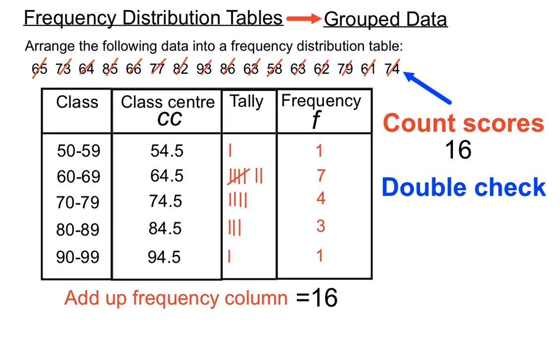And we can double check that we haven't missed any by adding up our frequency column and making sure we've processed 16 scores onto our table here. So 7 plus, 1 plus 7 is 8, plus 4 is 12, plus 3 is 15, plus 1 is 16. So if that count of the original scores tallies up nicely and agrees with the total of the frequency column, we should be confident that we've done everything pretty correctly there.